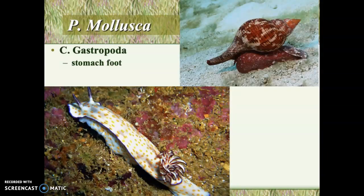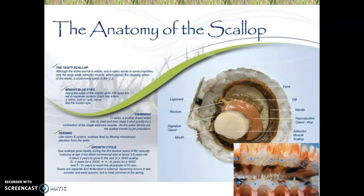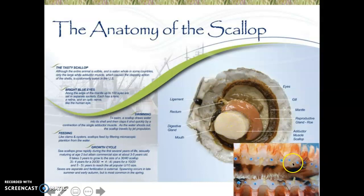The gastropod mollusks are the snails and slugs — 'gastro' means stomach and 'poda' means foot, so stomach-foot. The bivalve mollusks are the clams, mussels, oysters, and scallops — a very tasty group. This slide shows an interesting thing about a scallop: the adductor muscle, which holds the shell shut, is the part that people eat. Another interesting thing about scallops is that they have eyes — the blue dots you see on the scallop are all little eyes. They have a whole row of eyes on the top and bottom shell that you can see when the shell opens.